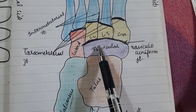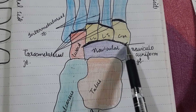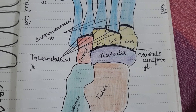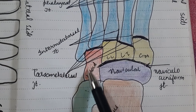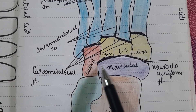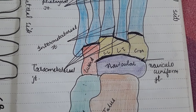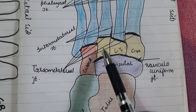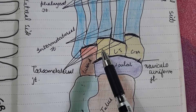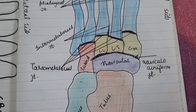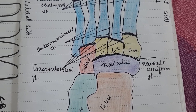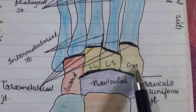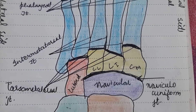The third mid foot joint is the cuneonavicular joint: cuneiform and navicular. Next is the cuboidonavicular joint: cuboid and navicular articulating together. Then the cuneocuboidal joint: between the cuneiform and the cuboid. And the last one is the intercuneiform joint, which is the articulation between the three cuneiforms. That covers all six joints of the mid foot.